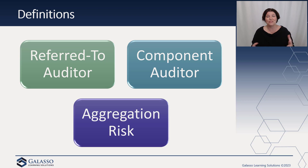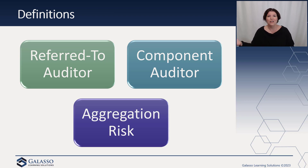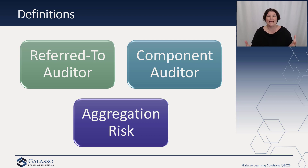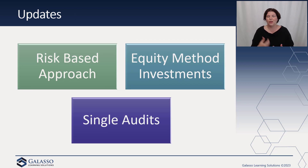The concept of aggregation risk has been a core point of group audits since the clarity standards, when group audits were first introduced. Even then there was a lot of confusion over what constituted a group audit — it didn't have to be a parent-subsidiary relationship, it didn't have to involve another auditor, it could be a different office of the same firm. This has been a common deficiency in these audits, and SAS 149 should make things cleaner and better understood.